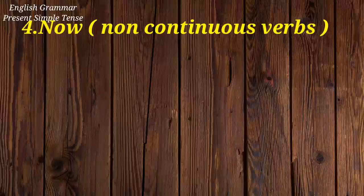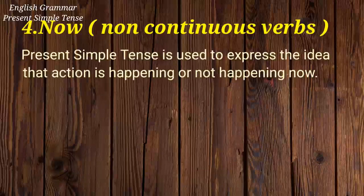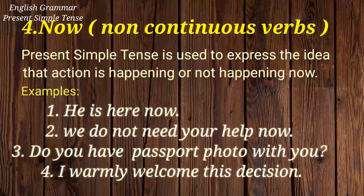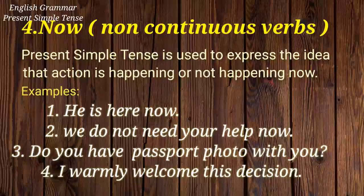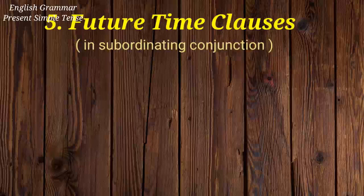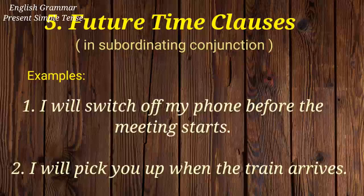In non-continuous verbs, present simple tense is used to express the idea that an action is happening or is not happening now. For example: he is here now, we do not need your help now, do you have your passport with you, I warmly welcome this decision. And in future time clauses with subordinating conjunctions — I will switch off my phone before the meeting starts, I will pick you up when the train arrives.